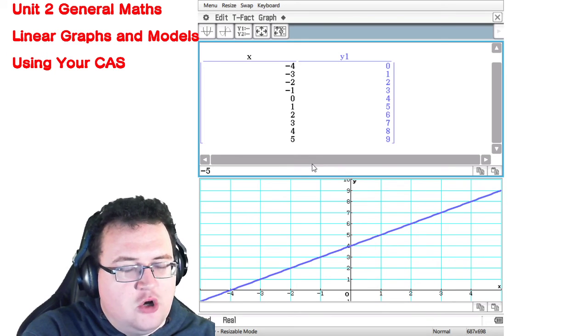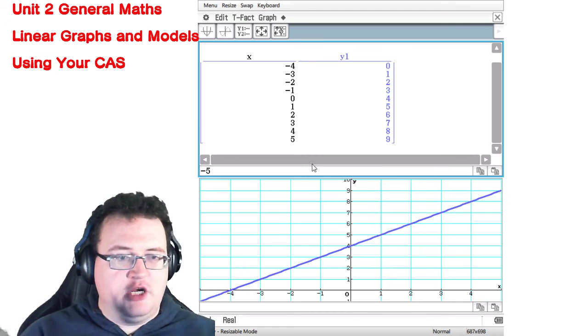Note that your CAS goes up and down, whereas in your workbooks you generally work left to right.